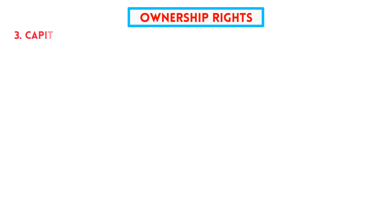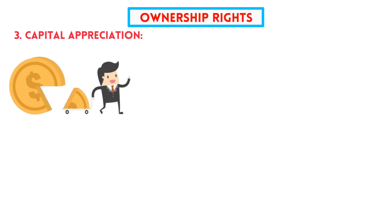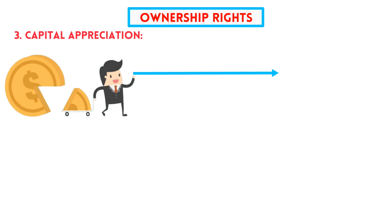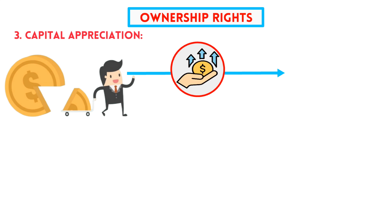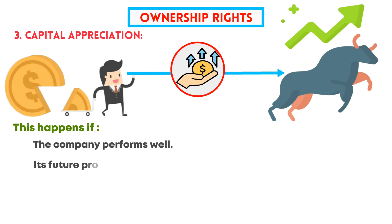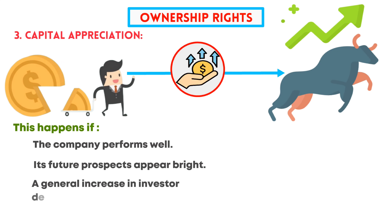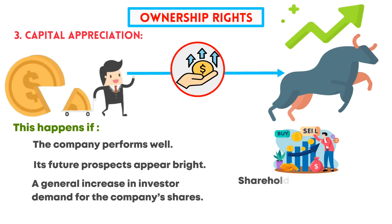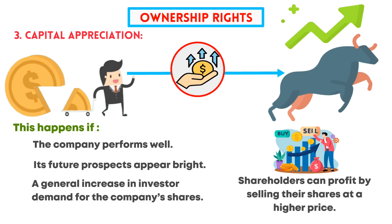Third, capital appreciation: ordinary shares have the potential for capital appreciation, meaning their price can increase over time. This happens if the company performs well, its future prospects appear bright, or there's a general increase in investor demand for the company's shares. Shareholders can profit by selling their shares at a higher price than they bought them for.